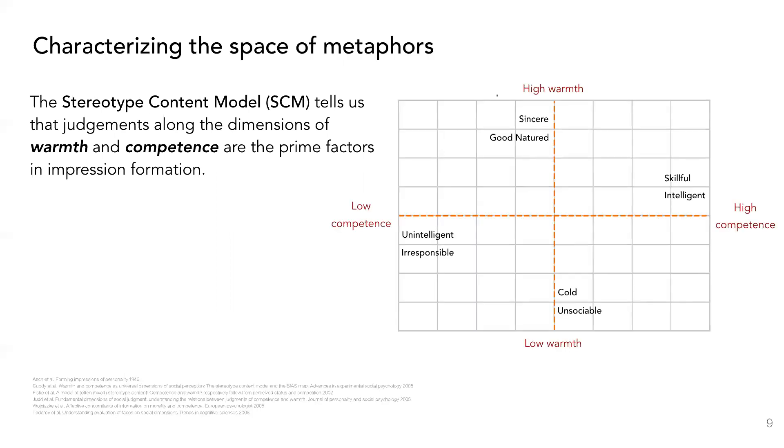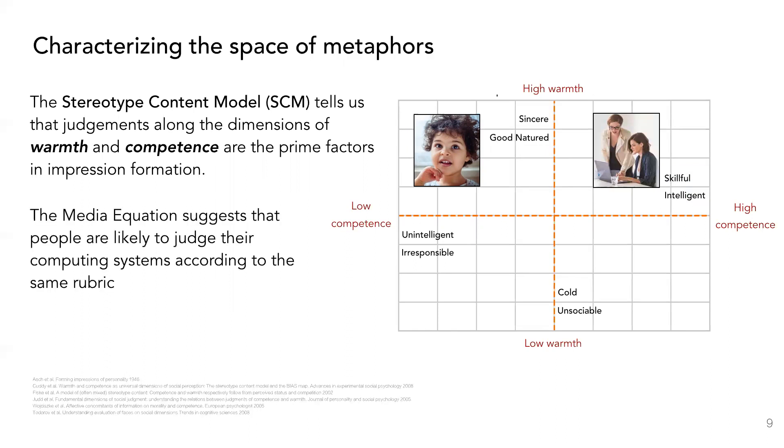Warmth is characterized by notions of sincerity and good-naturedness, while competence is characterized by notions of intelligence and skillfulness. For example, we would judge a baby to be high warmth but low competence, and a professional to be high warmth and high competence. We would expect our impressions of computing systems to be dictated by the same factors, as the media equation suggests we apply social rules to our interactions with computers as well.